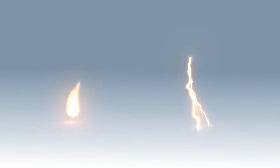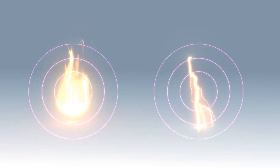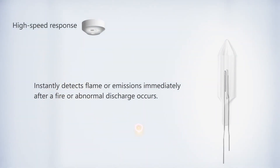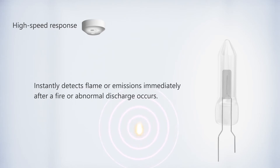Flames and electrical discharges constantly emit weak UV light. UVtron is highly sensitive to this weak UV light so that it can instantly detect flame or emissions immediately after a fire or abnormal discharge occurs. These weak flame and discharge emissions are usually difficult to detect with ordinary smoke and heat detection devices.